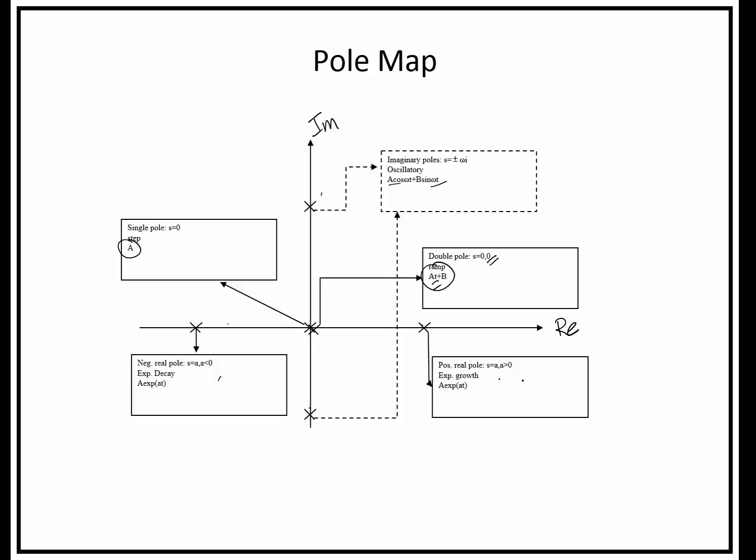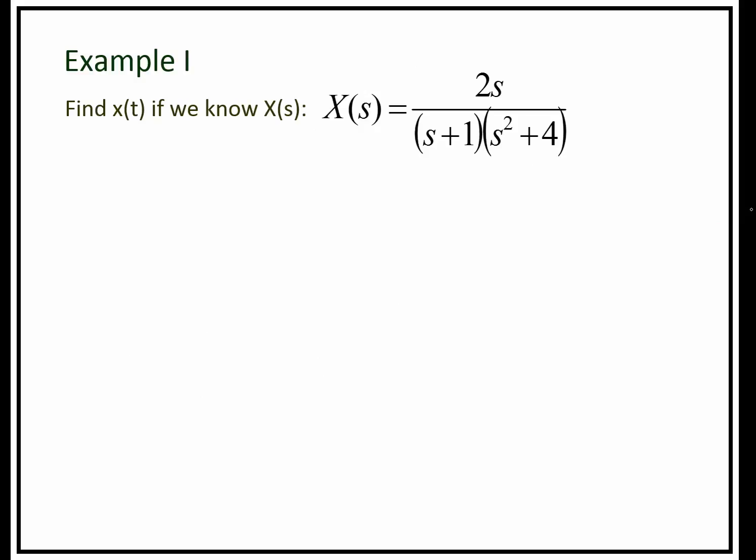Based on the pole map and the combinations of the locations of the poles, we can then very quickly find the behavior of the function in time domain as it corresponds to the S domain.